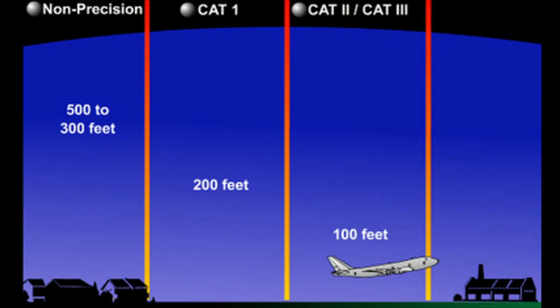Go around means to abandon the landing and climb. In Category 2, the minimum is 100 feet above the ground. If you cannot see the runway in lights, they can use a Category 3 ILS approach. Category 3 ILS approach has zero visibility. The aircraft can land and taxi automatically, with pilots monitoring the instruments and aircraft systems.